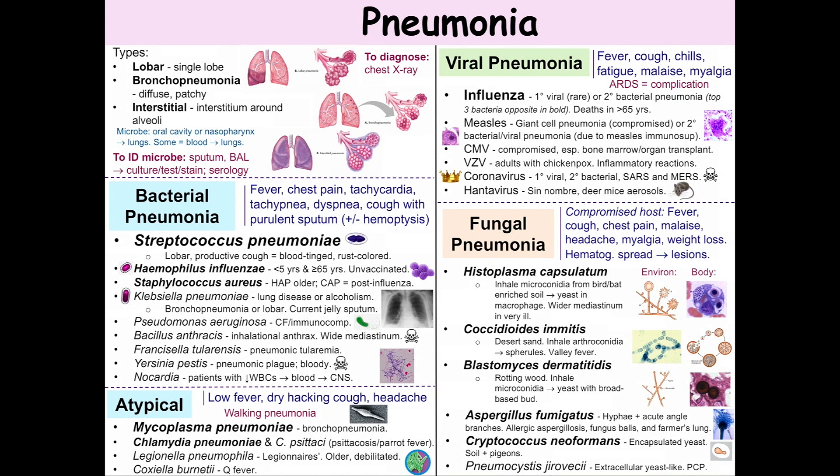Streptococcus pneumoniae is the number one cause of bacterial pneumonia. As mentioned, it causes a lobar pneumonia. It has virulence factors: a capsule, IgA protease, and pneumolysin. Pneumolysin damages host cells, causing an inflammatory response.